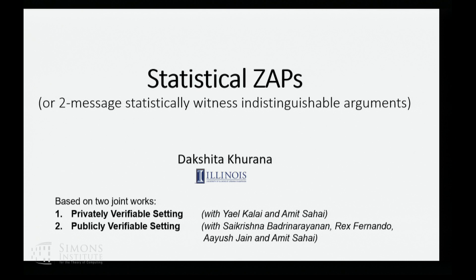The second work improves upon this result in some ways to get WI arguments in the publicly verifiable setting. This is joint work with Saikrishna Badrinnarayanan, Rex Fernando, and Ayush Jain, who are all students at UCLA, and Amit Sahai, who is also at UCLA and who is here.